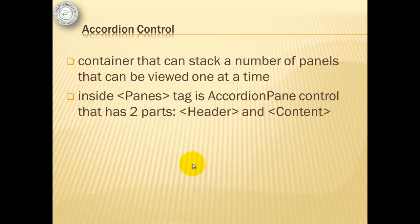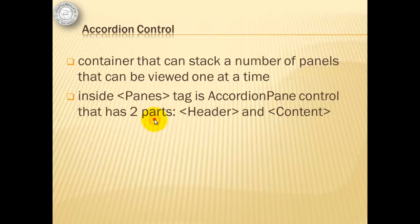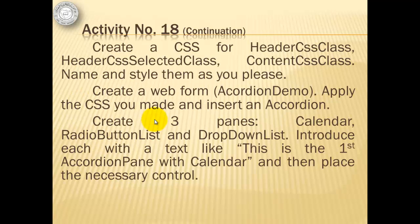One of the most popular controls in the AJAX Control Toolkit is the accordion control. It's a container that can stack a number of panels that can be viewed one at a time. Inside the panes tag is an accordion pane control that has two parts: the header and the content. For our next activity, we will create CSS for the header CSS class, header CSS selected class, and content CSS class. Then we will create a web form called accordion demo, apply the CSS, and insert an accordion.